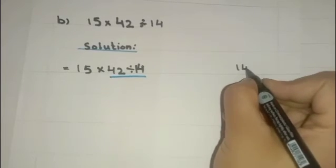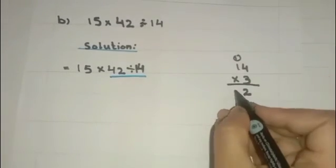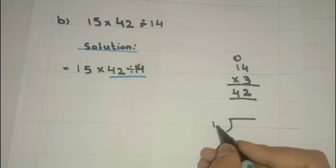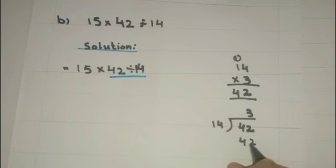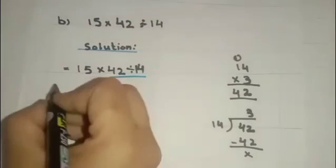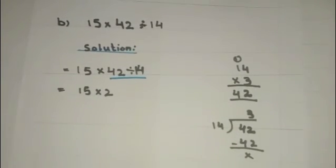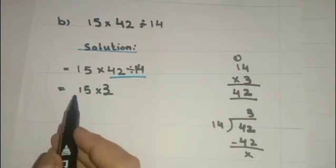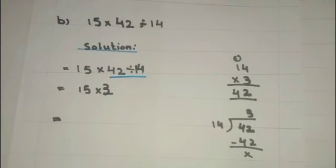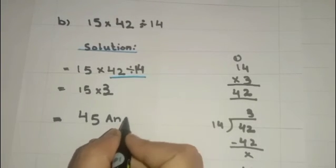So students, to divide 42 by 14, we have to read out the table of 14: 14 threes are 42. Means 42 divided by 14 is equal to 3. Now 15 multiply by 3: 15 threes are 45. 45 is your answer.